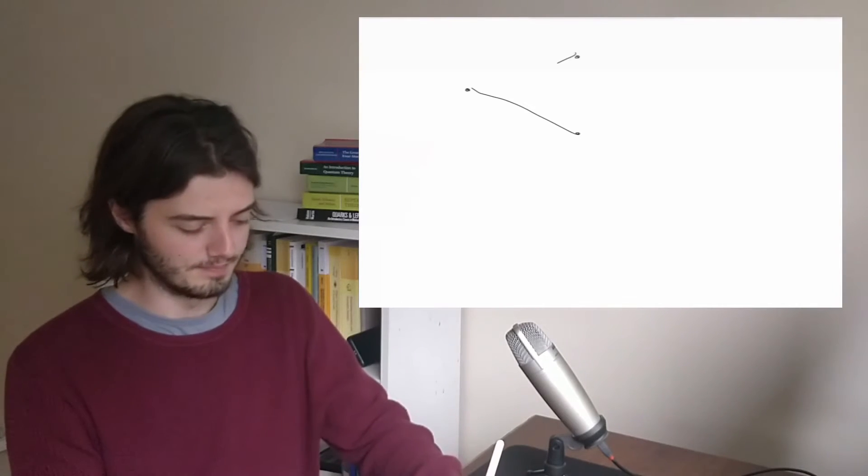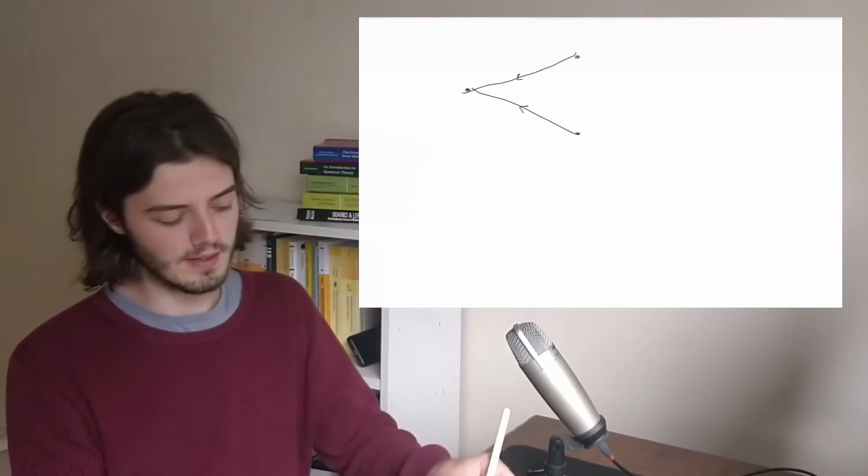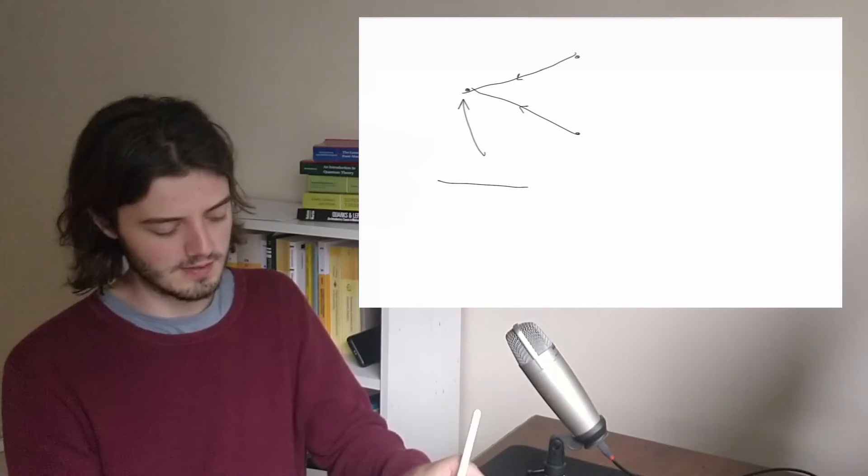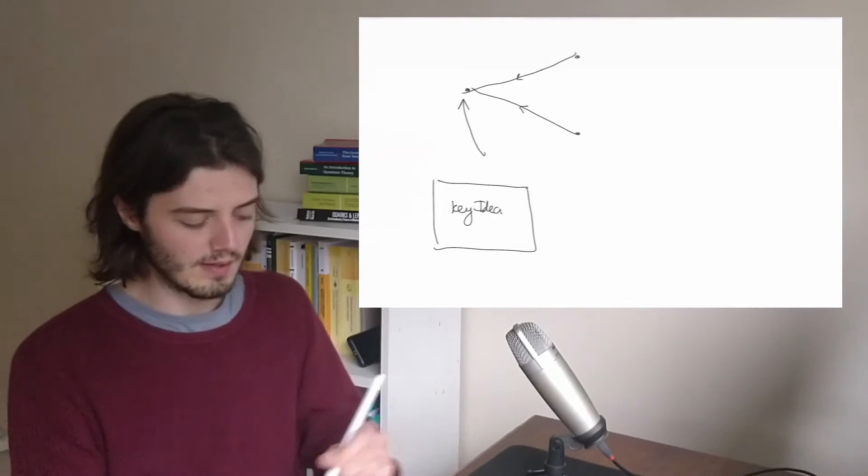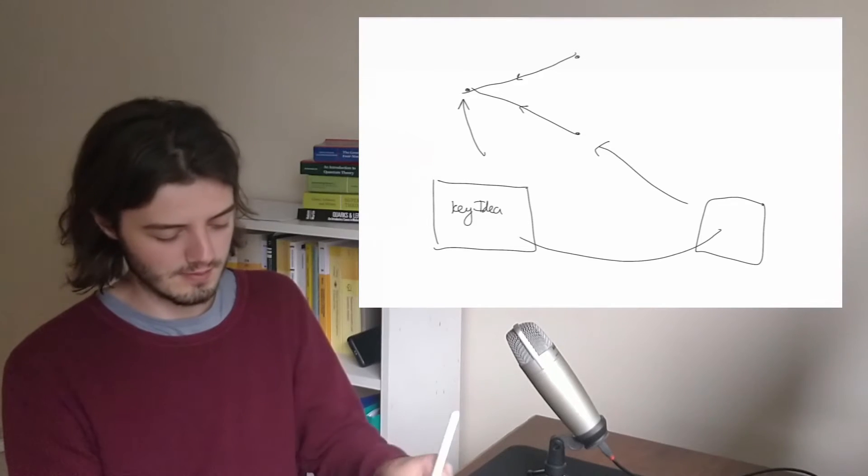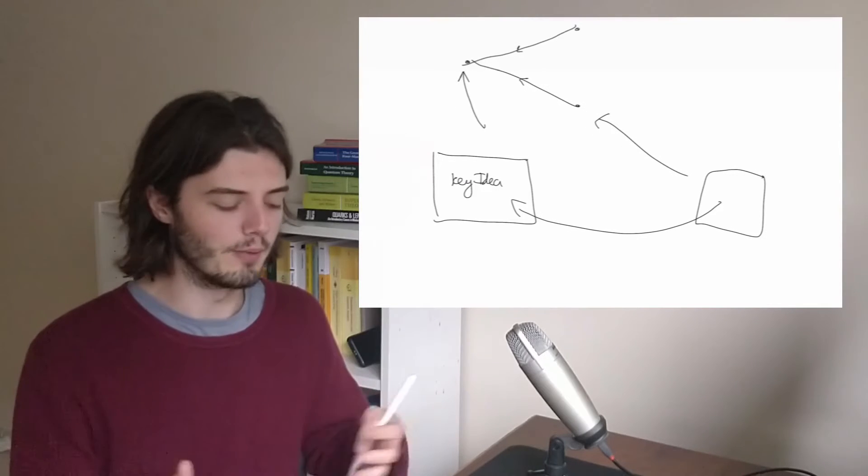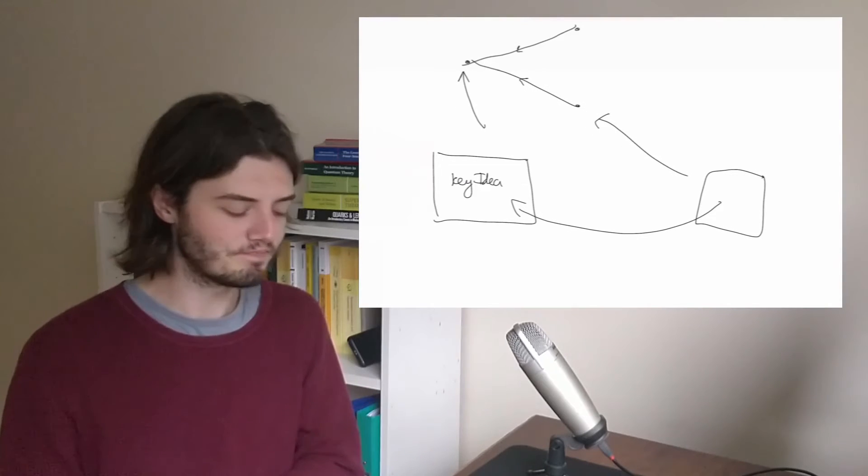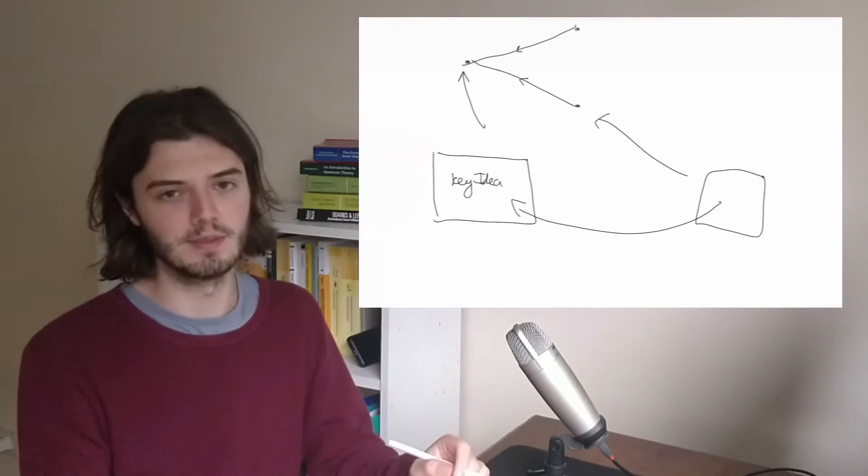The Zettelkasten method is where you basically want to create a network of notes. You write short notes that express one key idea, and then you have some other note that will maybe reference your original note. So over time you end up making a big network of notes. I think I've made 300 notes or so in the first six months of using the Zettelkasten.